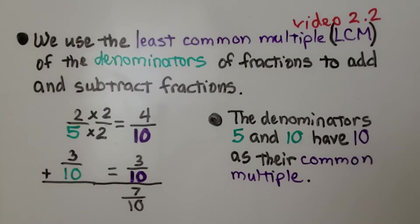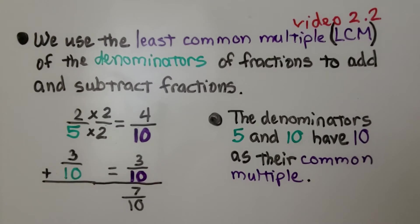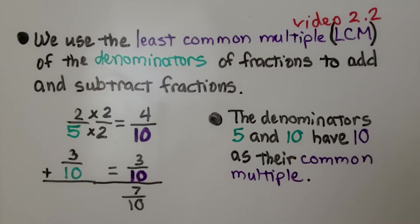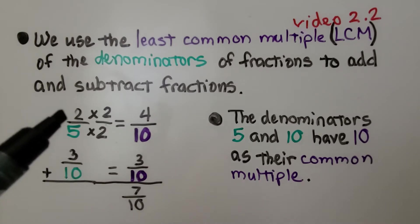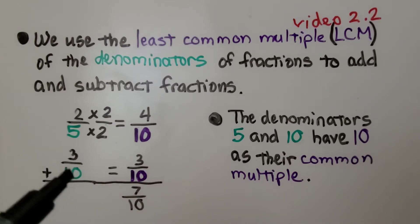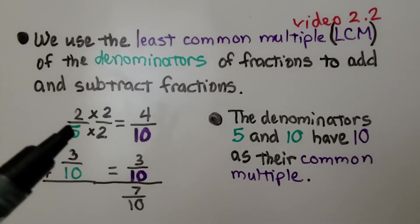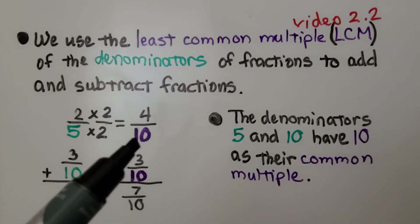We use the least common multiple, the LCM, of the denominators of fractions to add and subtract fractions. We're going to get into this more in the next lesson, but we learned about LCM in video 2.2, which is also linked in the description. If we're adding 2 5ths and 3 10ths, we can't add them unless they have the same denominator. The denominators 5 and 10 have 10 as their common multiple.